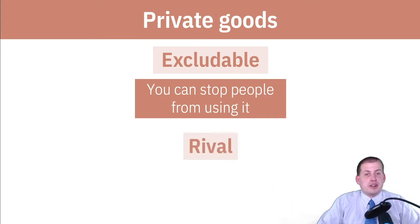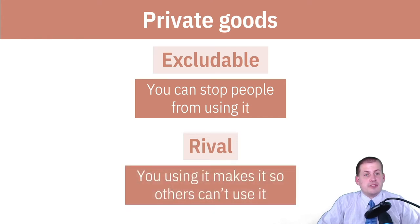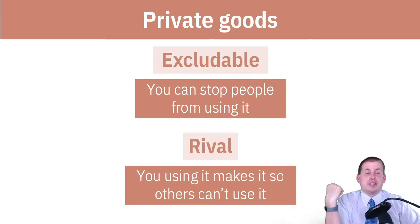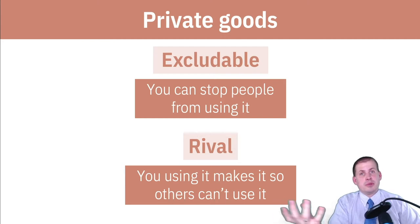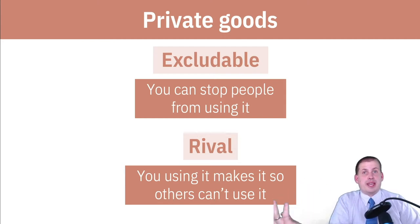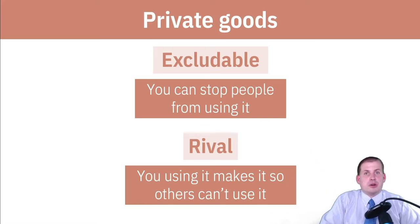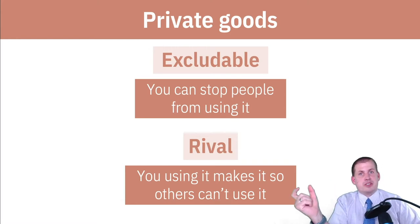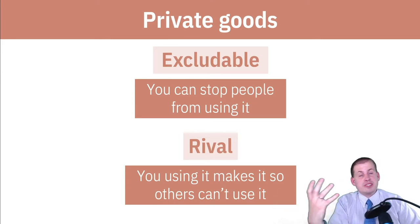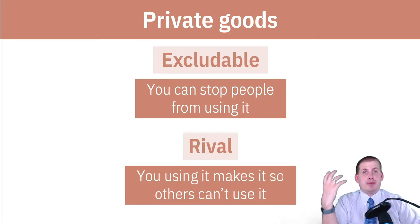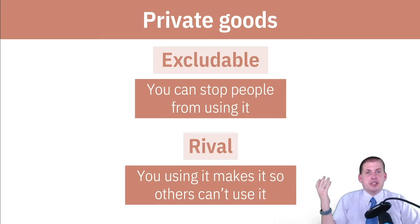A private good is also rival, which means if somebody uses it, other people can't use it too. Going back to the hotel example: a hotel room is rival — if somebody rents it, nobody else can use that room. The hotel can be at full capacity. This applies to most things you see in a store — if you can buy and consume it, it's by default excludable and rival.